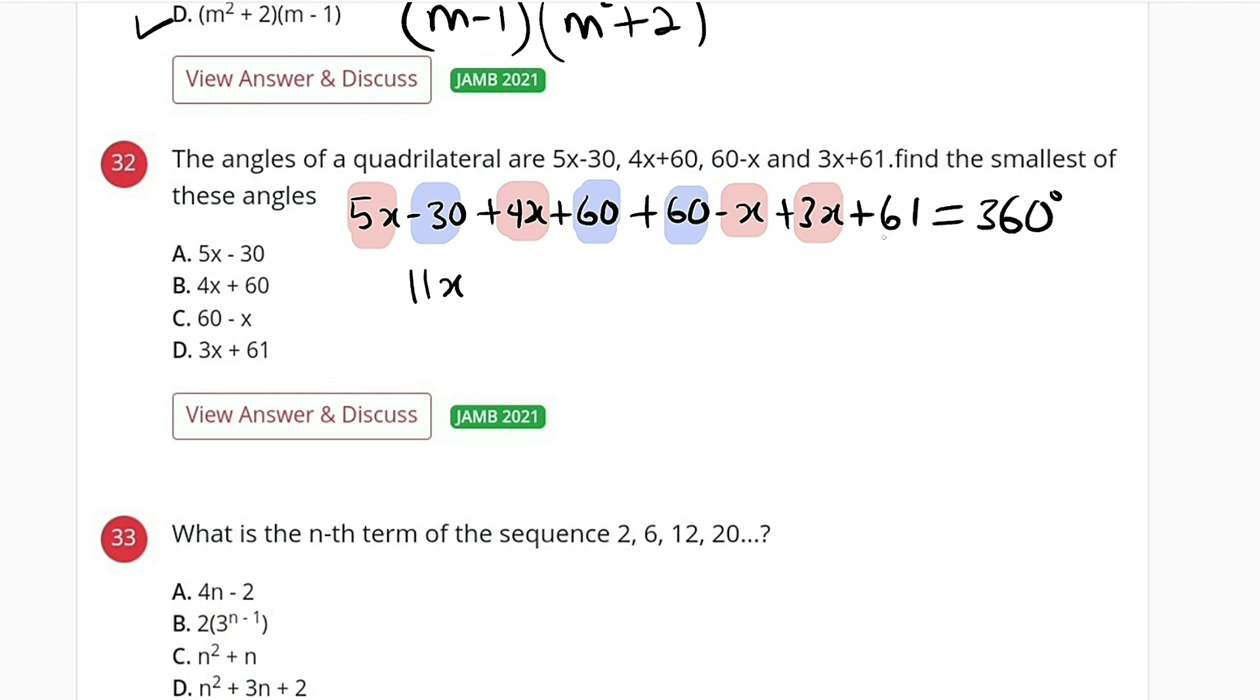Then if you bring 1 here we have 151, so we have 11x plus 151 equals 360.